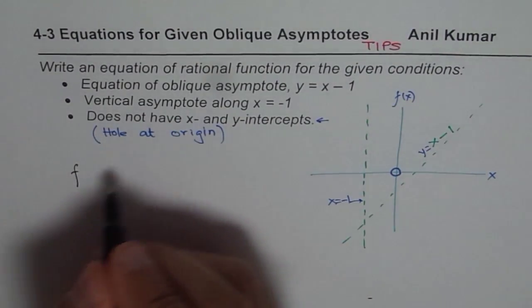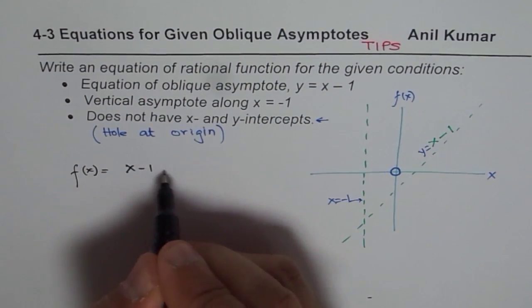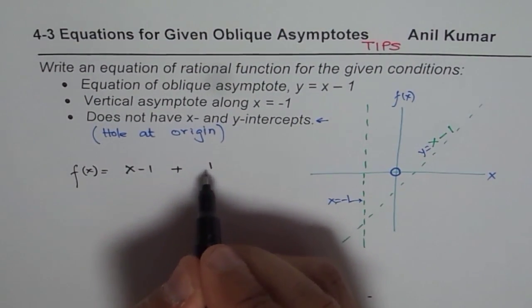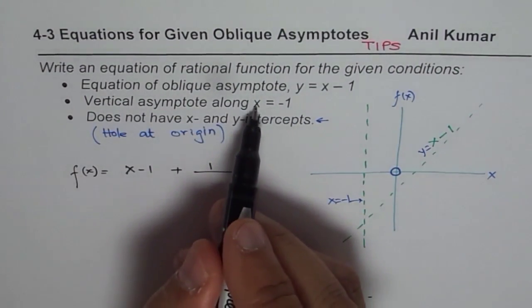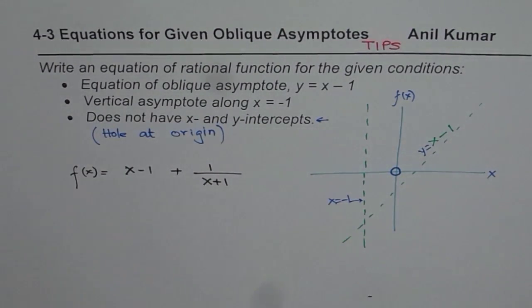So this is kind of critical thinking. So when you say oblique asymptote is x - 1, function is x - 1 plus some remainder. And vertical asymptote is x = -1, that means x + 1 here. So that becomes our function.